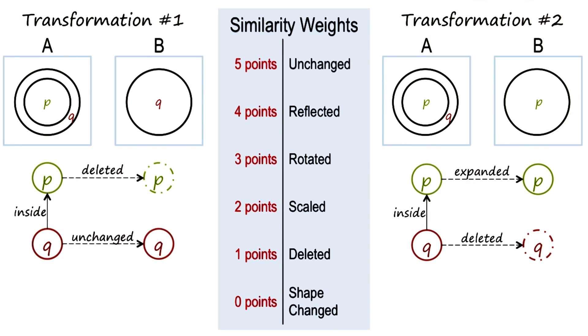In transformation number one, you can see that P is getting deleted, which we gave a weight of one, and Q remains unchanged, which we gave a weight of five. So the total weight here is six.